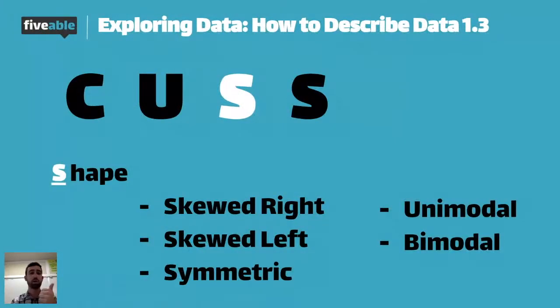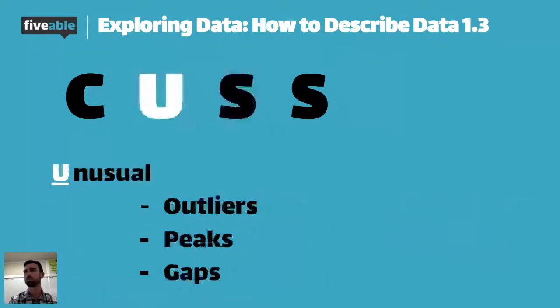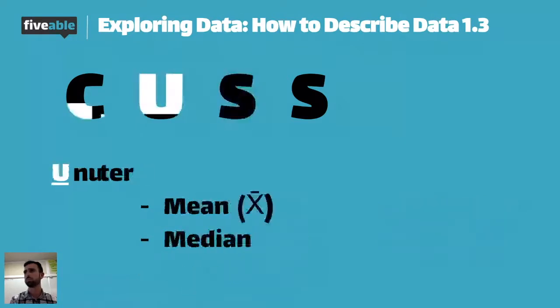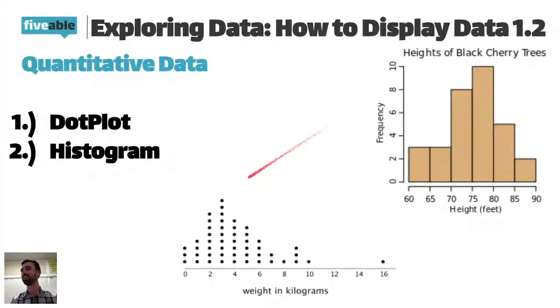So we talked about skewed right, we talked about skewed left. Next is symmetry. So we, as statisticians, really like symmetry because it tells us a very clear center of the distribution. And symmetry kind of looks like this one. The height of black cherry trees. So over here, we got our data. And this looks roughly symmetrical. Like I was saying, you're rarely going to have anything that's perfectly symmetrical in statistics.